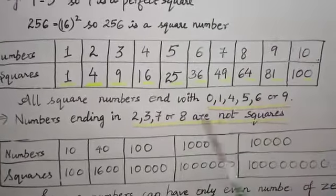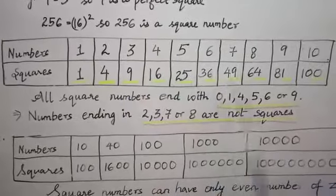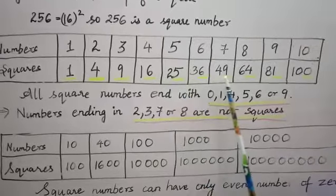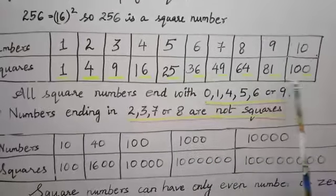Now, you can see I have underlined the last digits of all the square numbers. It is 1, 4, 9, 6, 5, 6, 9, 4, 1, 0.